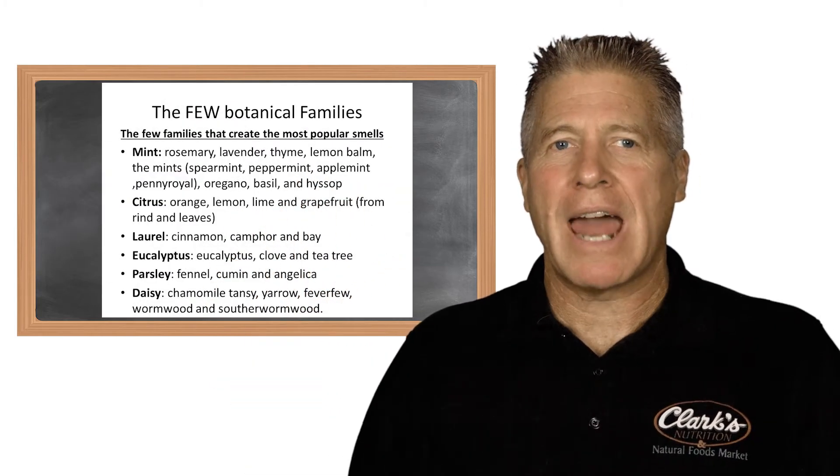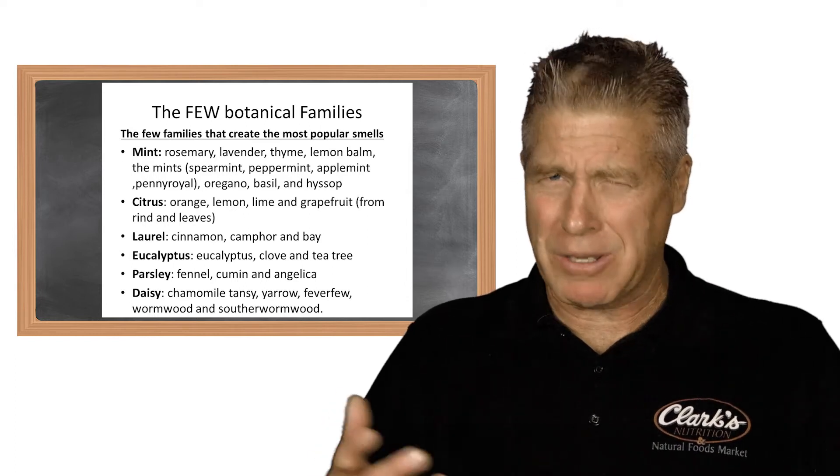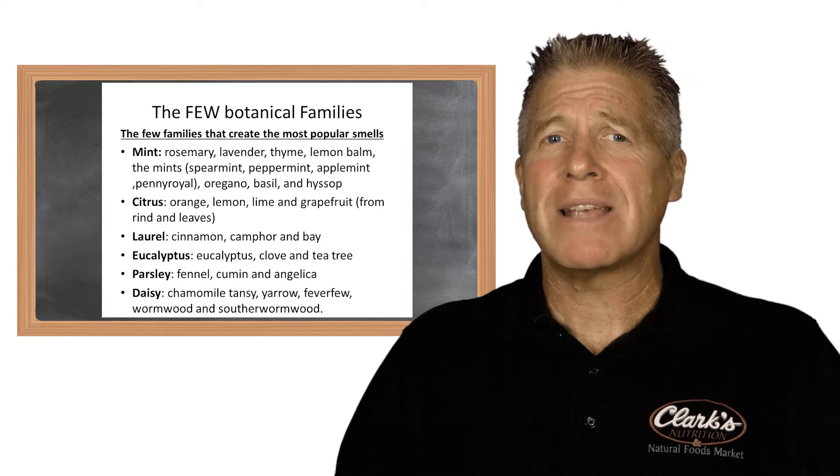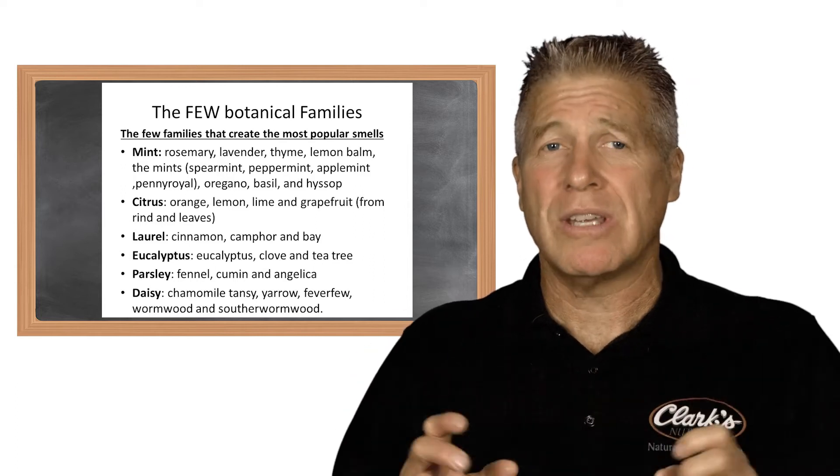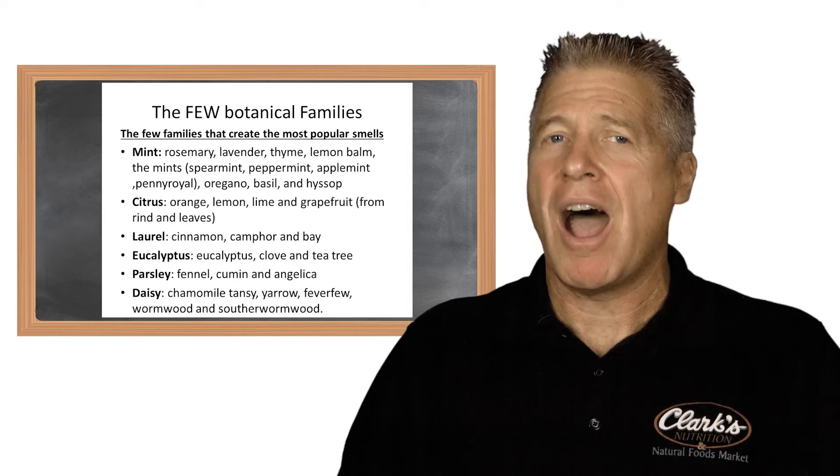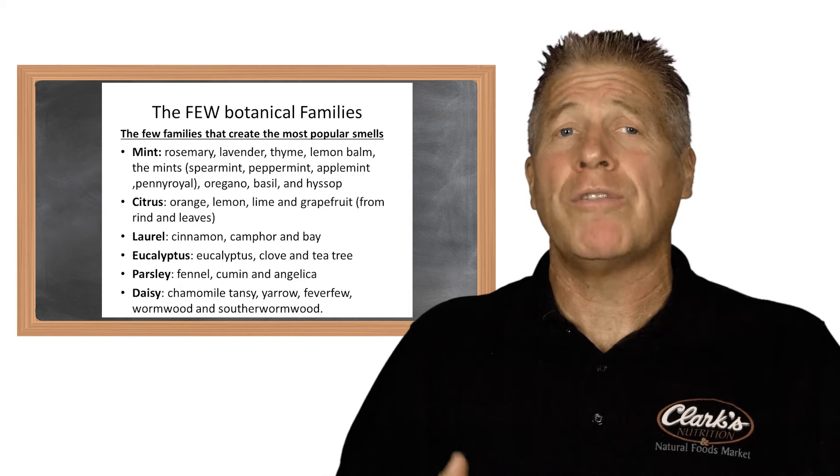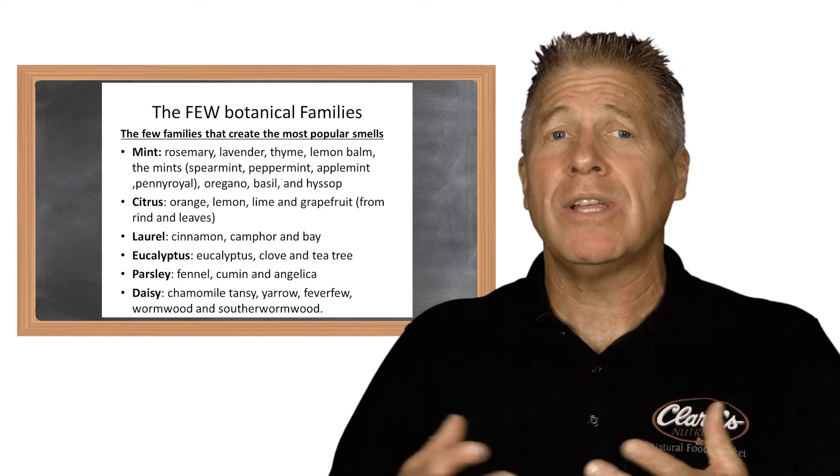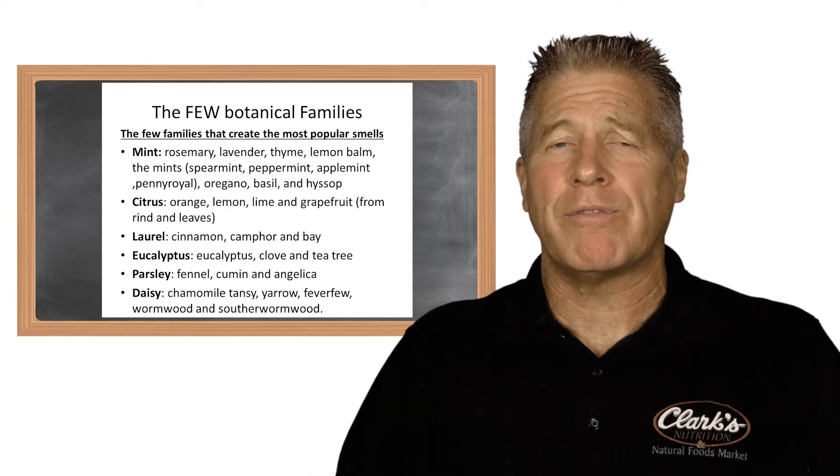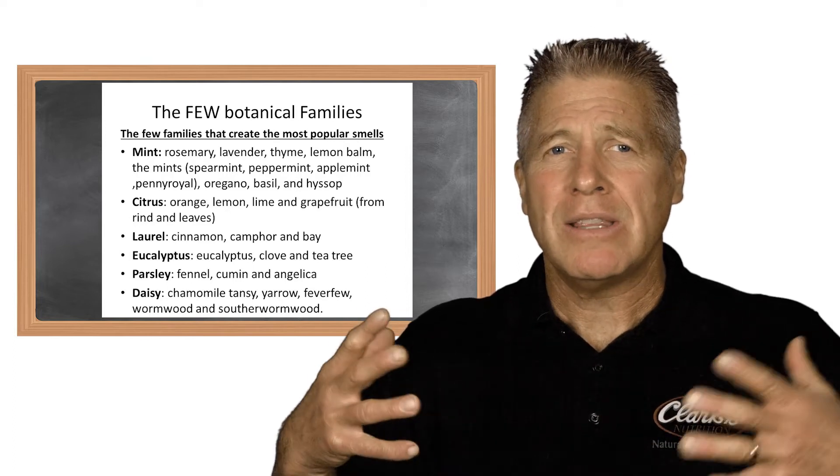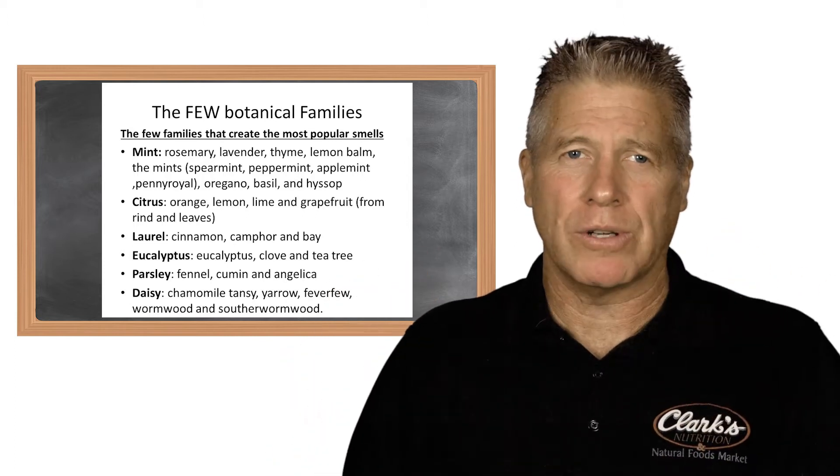A couple of my favorites are the mint family. For instance, the mint family obviously has peppermint, spearmint, but it also has lavender, penny royal, and a couple other different popular essential oils. Then you look at the eucalyptus family—obviously eucalyptus oil as well as clove oil. Then you look at the laurel family—it has camphor. Then you look at the citrus family—it's got orange, lemon, grapefruit. So what you'll notice is these plant constituents actually have a tendency to fall into different categories.